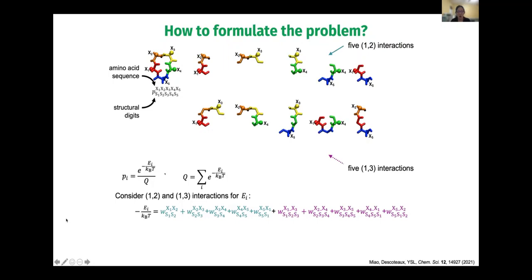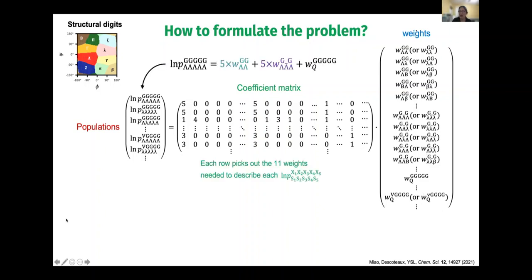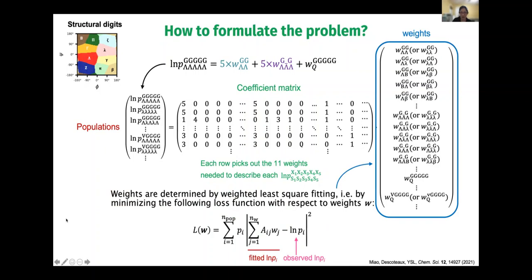In this first model, we consider 1-2 and 1-3 interactions. For example, what will change the preference of a specific structure probably depends on whether the first two amino acids are G-G or G-A or A-A. There are five such 1-2 neighboring interactions and five such 1-3 interactions in a cyclic pentapeptide. Our machine learning model has weights for all of these. In our training data set, we collect populations for different sequences adopting different structures, and we optimize all these weights so that the fitted population doesn't deviate from the observed population.